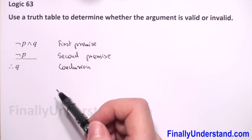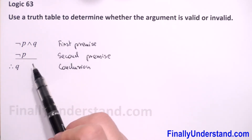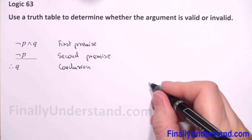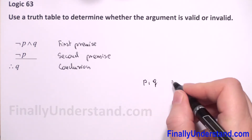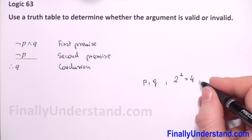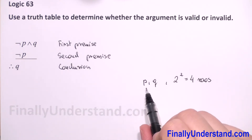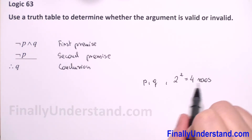Now we have to construct a truth table. To construct a truth table we first have to write how many simple statements we have. Here we have p and q, so we have two simple statements. That means we will have two-to-the-second, so four rows, because p can be true or false and q can be true or false, giving us four combinations.